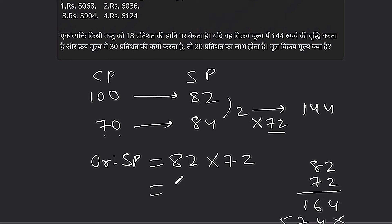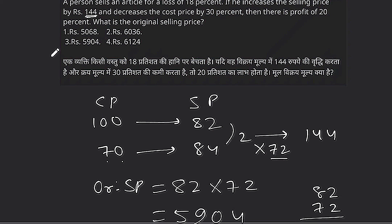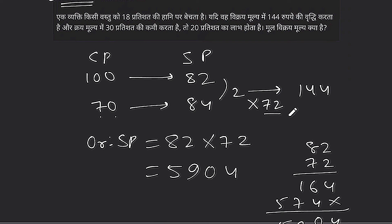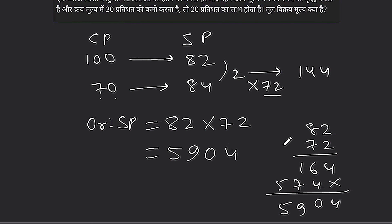The original selling price is rupees 5904. That is the 3rd option, 5904. There is a doubt about one of the steps — please refer back if needed.